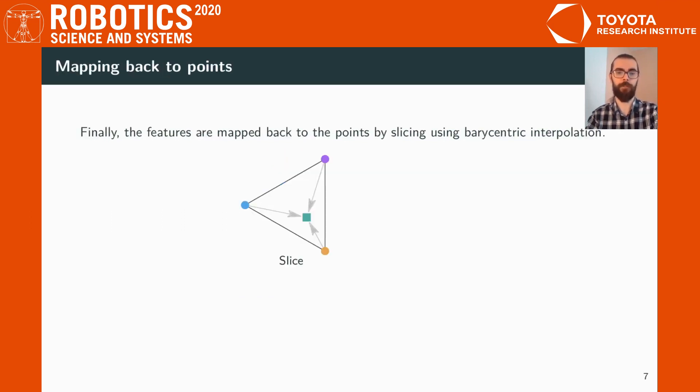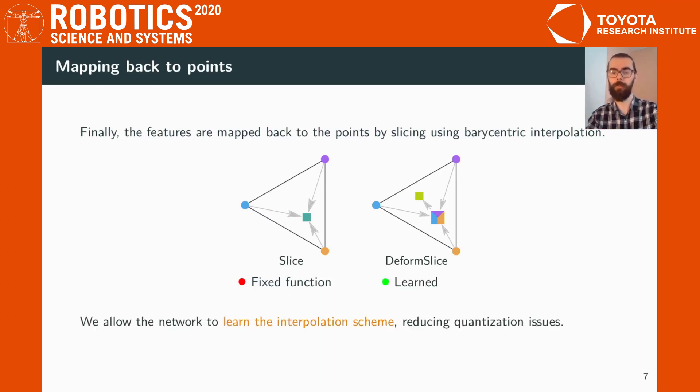Finally, the features of the lattice are mapped back onto the points using barycentric interpolation. However, this is a fixed function, which means it has no learnable parameters. Here we define a learned slice, a method which first gathers the features of the lattice and then regresses new barycentric coordinates. This renders it as a learned operation, which allows the network to learn a better interpolation scheme, further reducing quantization issues.